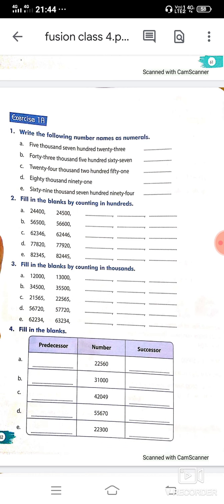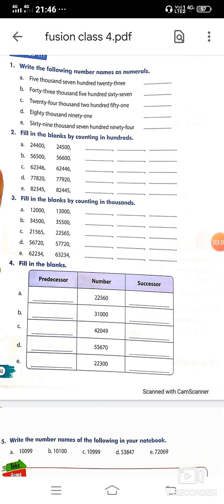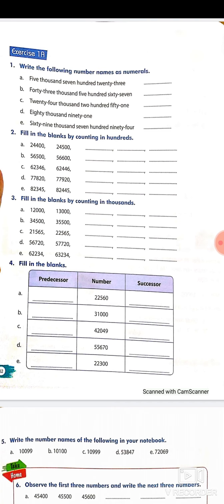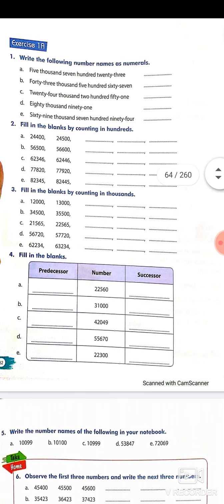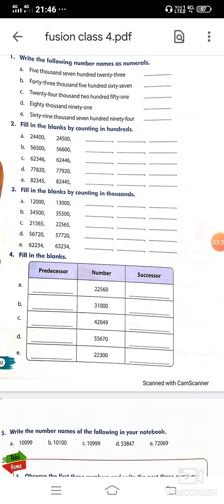Now fill in the blanks by counting in hundreds. We have to fill in the blanks by counting in hundreds. First what is given is 24,400. Then you see 24,500. The first one is 24,000, the second increases by 100, then 400, then 500. Here what will be 24,600, then 24,700, then 24,800. The second one is 56,500, then 56,600. That means we will count in 100s, between 100 and 100.